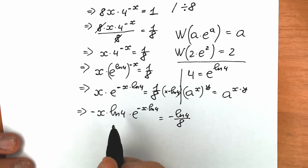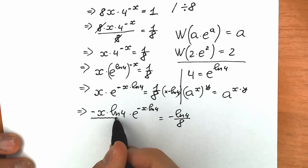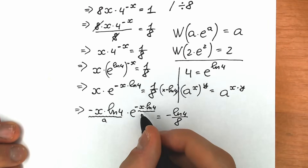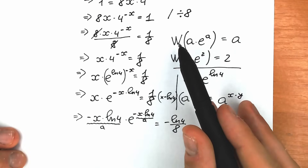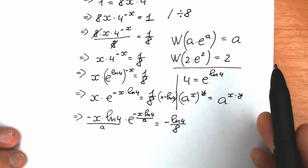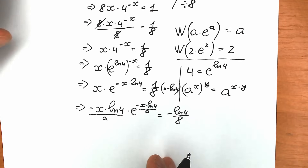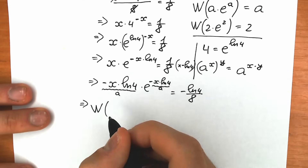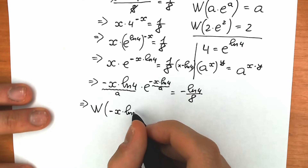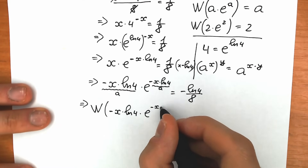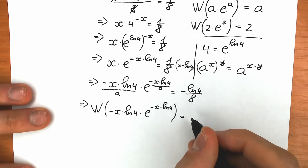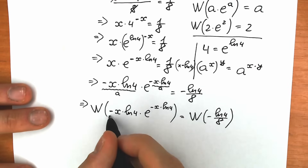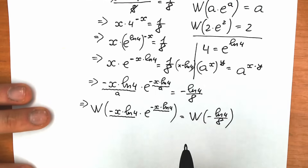Let's look closely at the left side. We have minus x natural log 4, and minus x natural log 4 again — this is the same expression. We can call this our a. In Lambert W function terms, W(a times e to the power a) equals a. So we have a great expression for applying the Lambert W function.